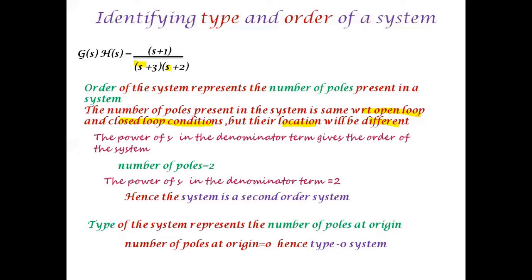How do we identify the type of the system? The type of the system represents the number of poles at the origin. In this example, we don't have any poles at the origin; hence the number of poles at the origin is zero. Therefore, I can call it a type 0 system. With this example, we can clearly identify and distinguish between the type and the order of the system.